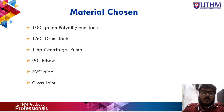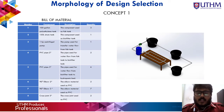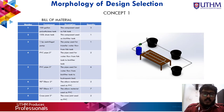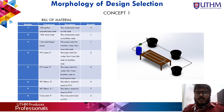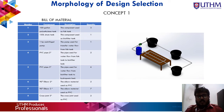The materials chosen for my project are: 100-gallon polyethylene tank, 150-liter drum tank, one-horsepower centrifugal pump, 90-degree elbow PVC pipe, and cross joint. For the morphology of design selection, there are three design concepts: concept one, concept two, and concept three. These three designs were developed to understand production innovation costs and to make a more in-depth comparison of many stages of production development, ultimately selecting one final design.